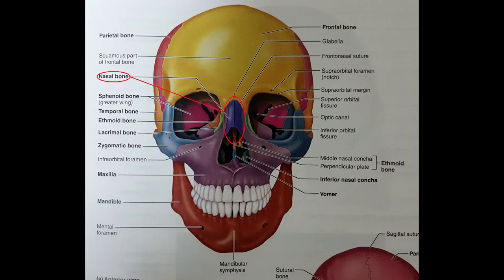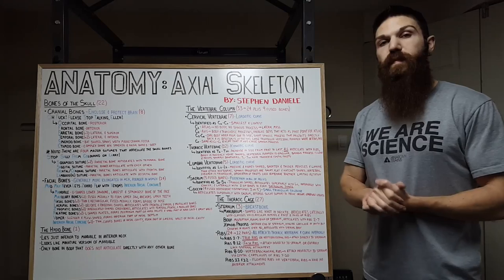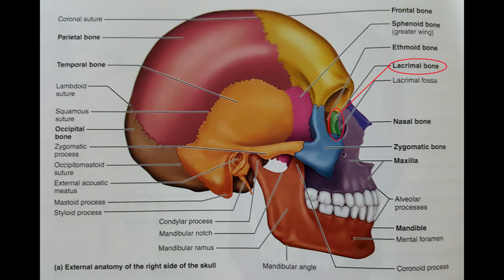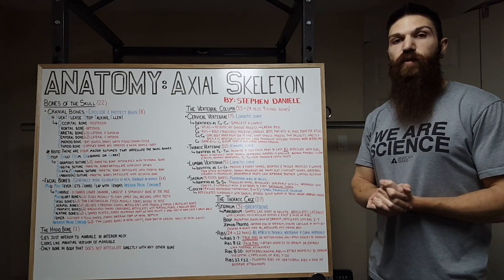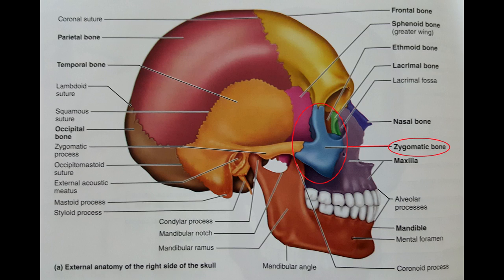Third, we have our nasal bones — one on the right, one on the left. These are thin and rectangular, and they are fused medially to form the bridge of the nose. Next, we have our lacrimal bones, again two. They are delicate and fingernail shaped and they articulate with the frontal, ethmoid, and maxillary bones. Our zygomatic bones form our cheekbones — two, one on the right and one on the left. They are irregularly shaped and they articulate with the temporal, frontal, and maxillary bones.